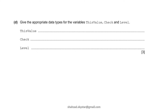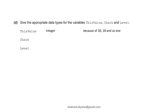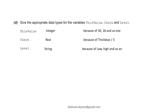Next: give the appropriate data types for the variables — this value, check, and level. This value is integer because of values like 30, 18, and so on. Check is real because it may contain a floating point value. Level is string.